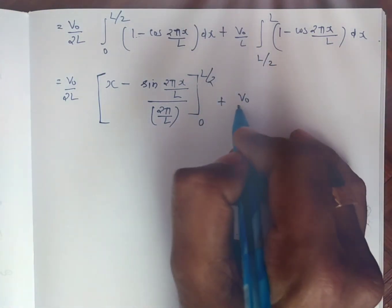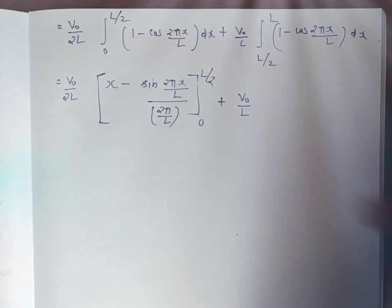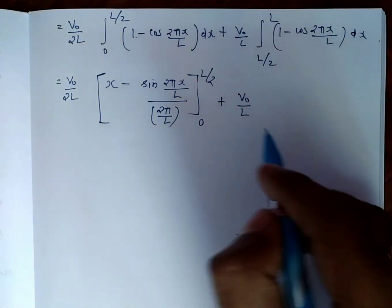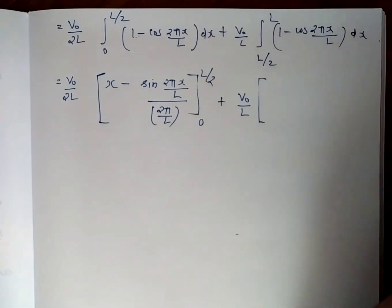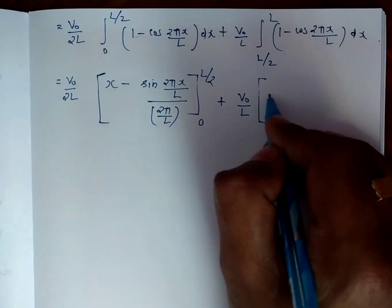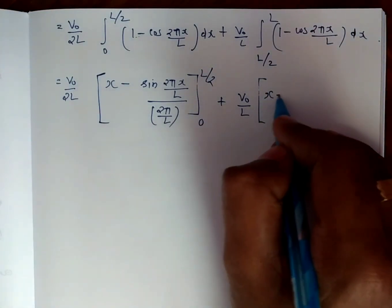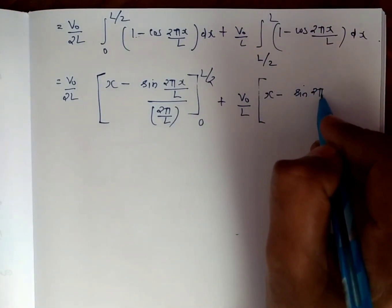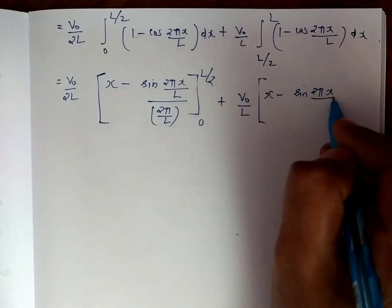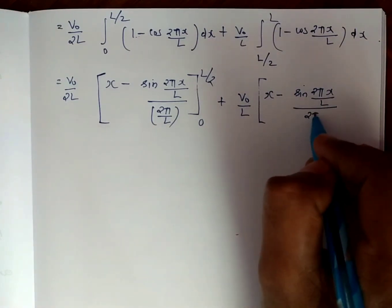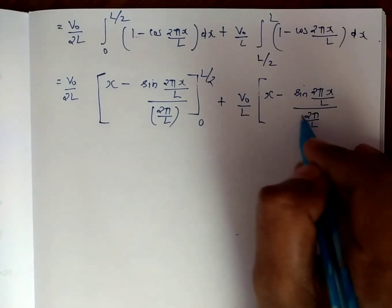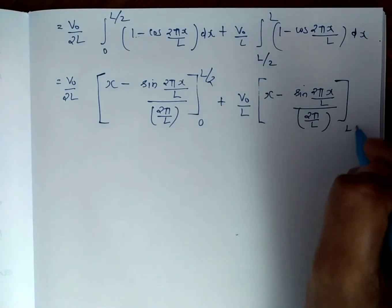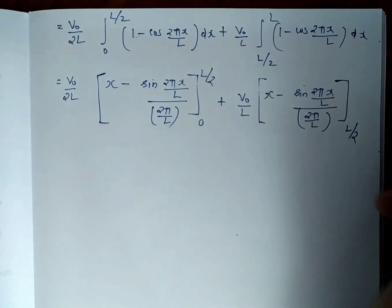Plus for the second part we have V0/L as constant, and the integration result is x minus sin(2 pi x / L) divided by (2 pi / L), with the limit from L/2 to L.